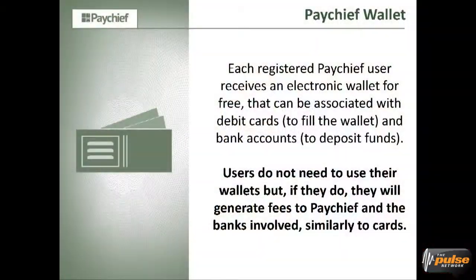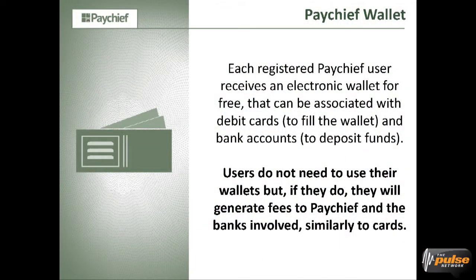Let's talk about wallets. Everybody has a physical wallet and probably some electronic wallets — wallets are not new. But in PayShift you have a wallet too, so you can authorize transactions, insert money using your debit card, and move electronic money from one place to another. You can have a bank account to deposit the funds. If you make money with PayShift, you can deposit the funds into a regular account. Users don't need to use their wallets — they can use PayShift just to make authorizations. But if PayShift makes fees, banks involved will make fees at the same time, similar to how credit and debit cards work.